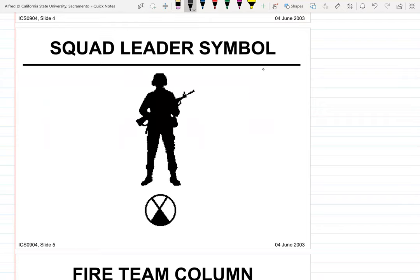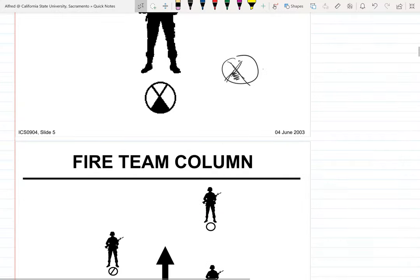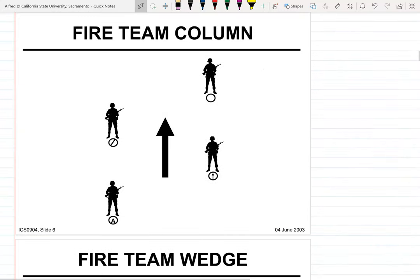The squad leader symbol is just an X colored in. I never really used the symbols at OCS personally — I would rather just draw a circle and put an S in the middle — but it doesn't really matter.